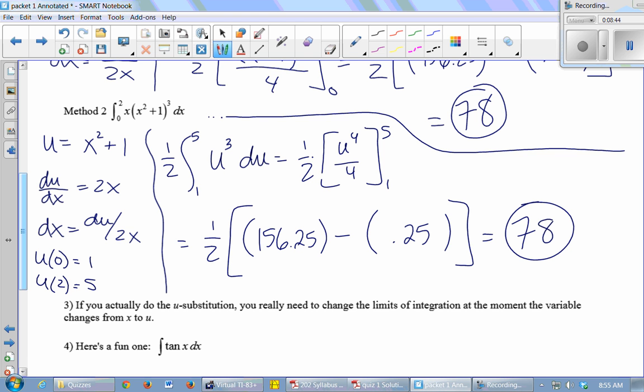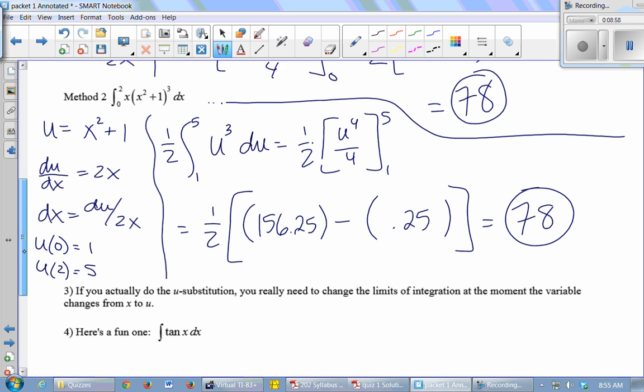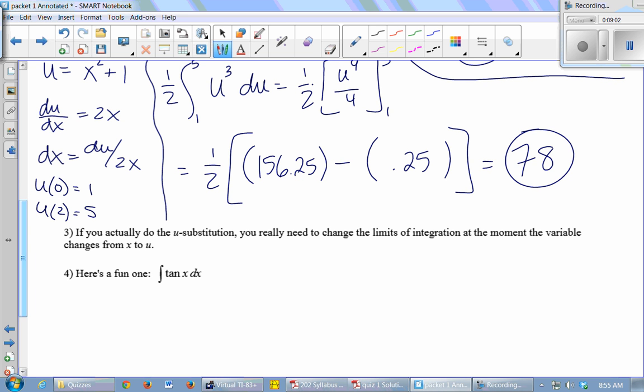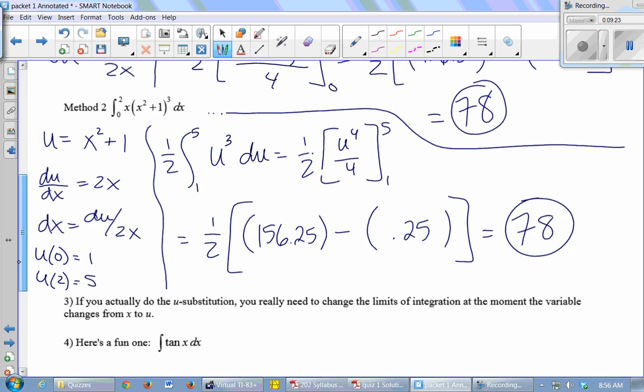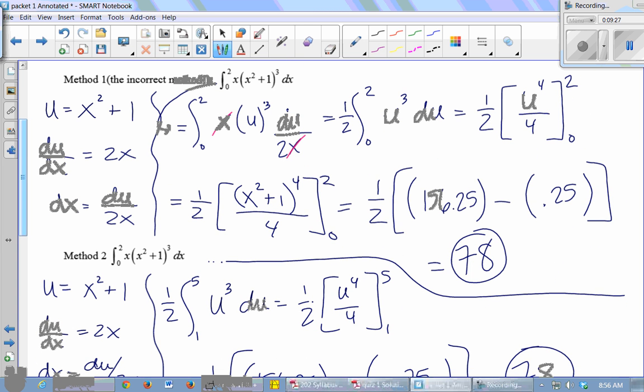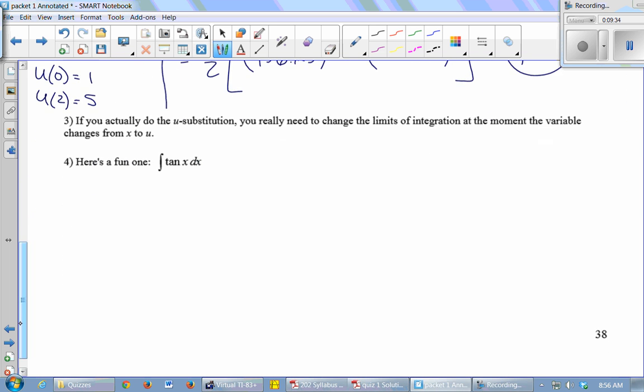You can do whichever one you like. Whichever one you like better is fine. So if we were being precise about it, when you're doing a u-substitution, you do need to change the limits of integration in order for the statement to be true. Right? In order to say that my original integral equals this integral, I should have changed the bounds of integration. Otherwise it's not really true. But we can say, well, I know it's not really true, but I'm going back to x, so I'm just going to leave the bounds.